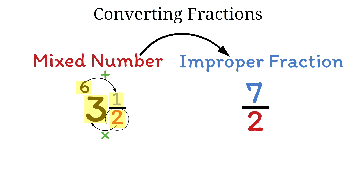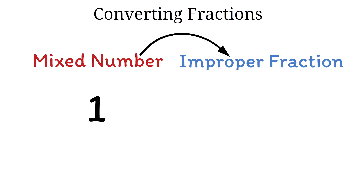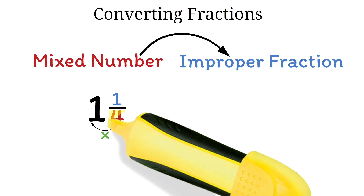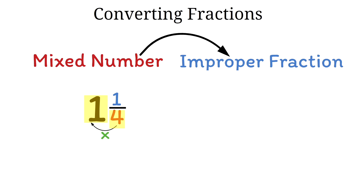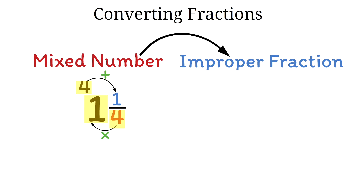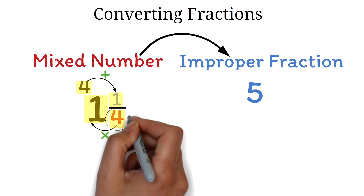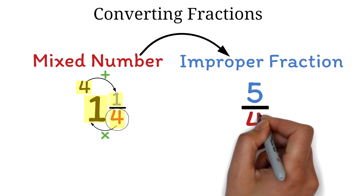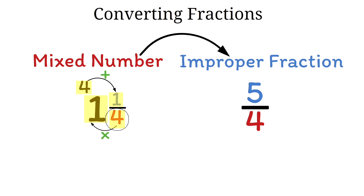Now let's do another example. Let's convert the mixed number 1 and 1 quarter into an improper fraction. First, we'll multiply the denominator by the whole number — so we multiply the 4 by the 1. 4 times 1 is 4. Next, we'll add the result to the numerator — so we add this 4 to the 1. 4 plus 1 is 5, so 5 becomes the numerator. Finally, we'll use the same denominator, which was 4. So the answer is 5 over 4.